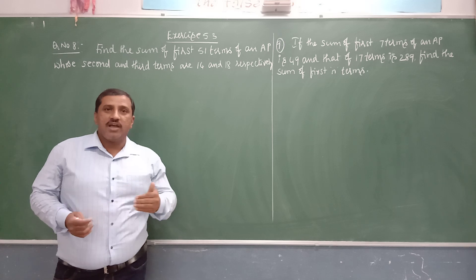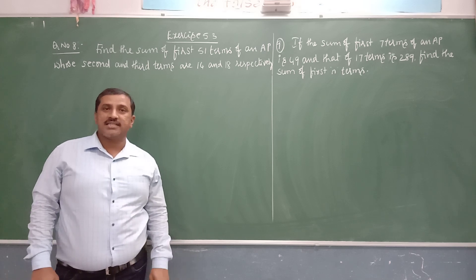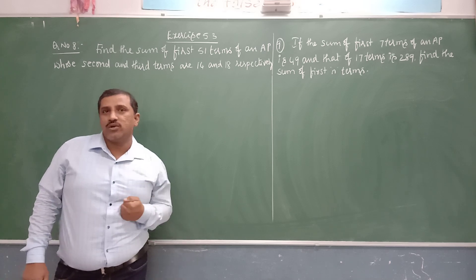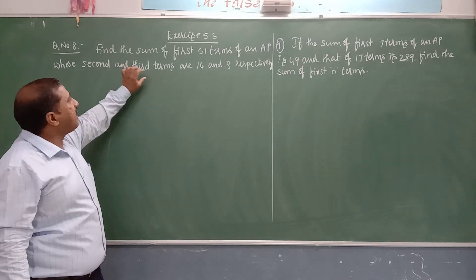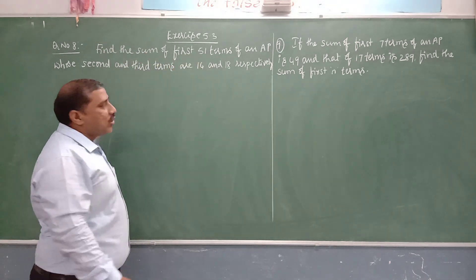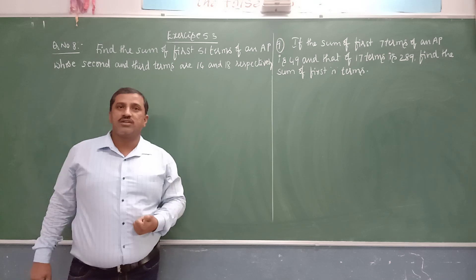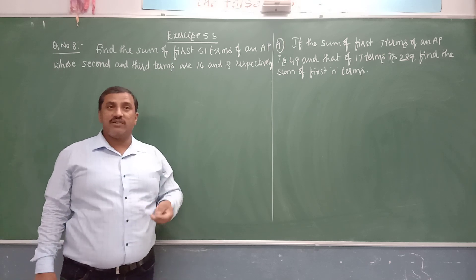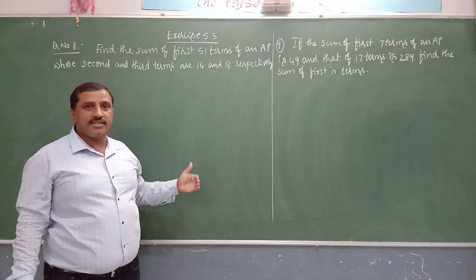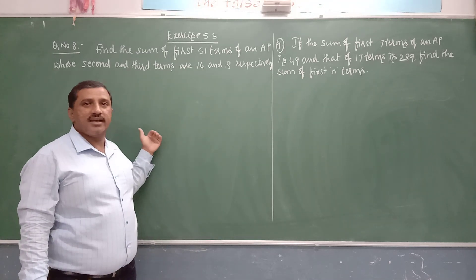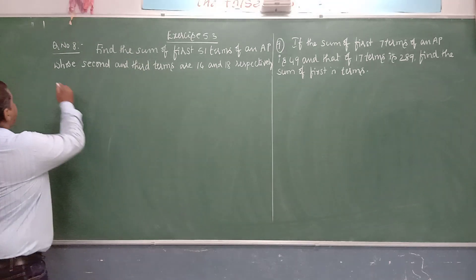To find the sum of n terms of an AP, we have two formulas: Sn = n/2 × (2a + (n−1)d), used when we know a, d, and n. The other formula is Sn = n/2 × (a + last term), used when first and last terms are known. Here neither first term nor last term is known, so we need to find them first.